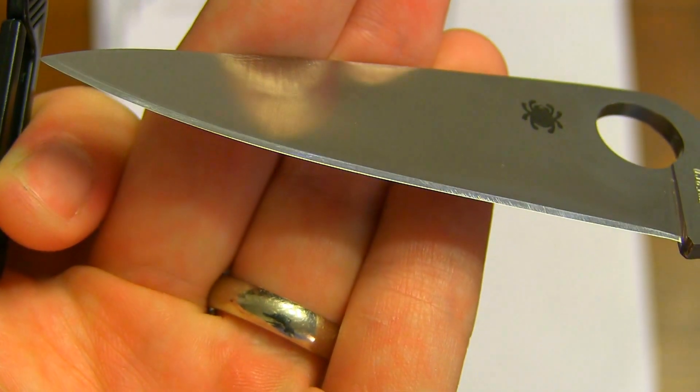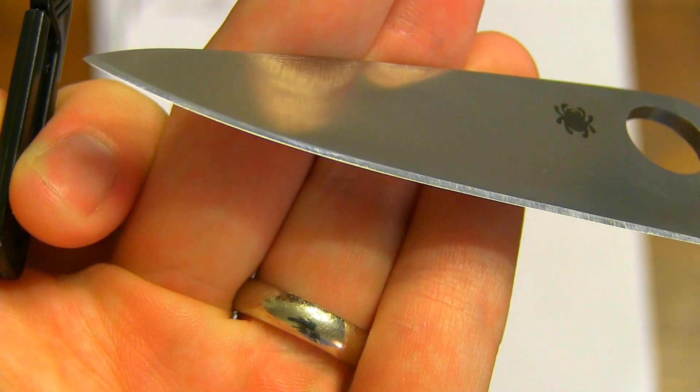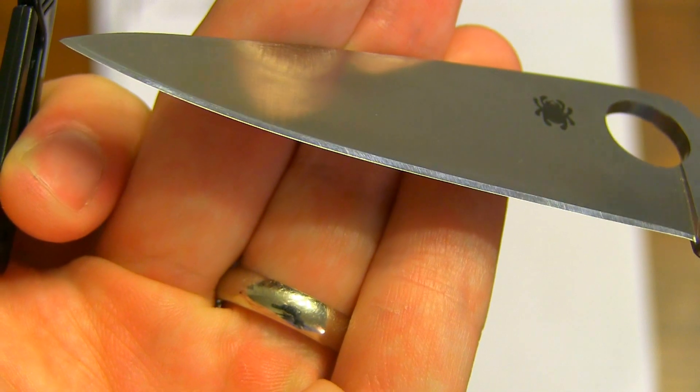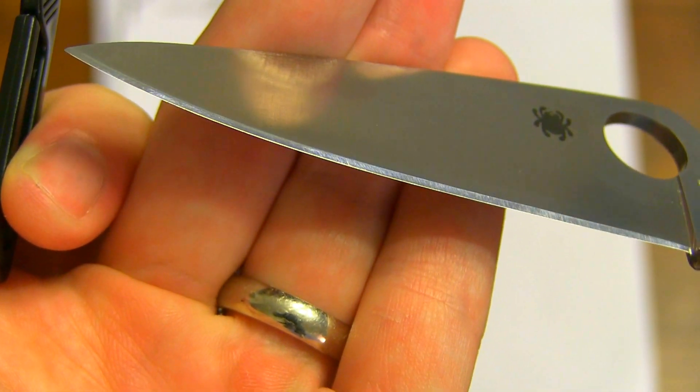I can make the secondary bevel reflect light, and then I can angle it up, and now only the micro bevel is reflecting light. That's a pretty good shot of it. Thanks to this new camera, I can actually do this.